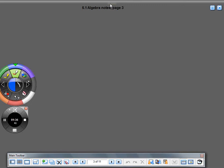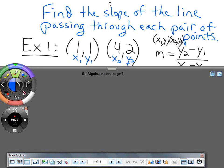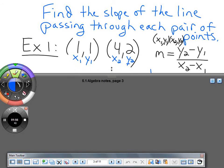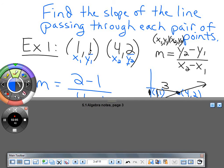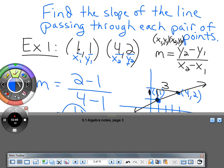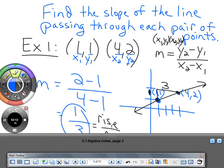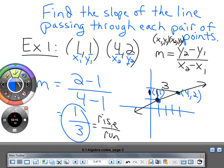Let's try a problem. Find the slope of the line passing through each pair of points. Label the points - it doesn't matter which is first. We have X₁, Y₁, X₂, Y₂. We subtract Y₂ minus Y₁ over X₂ minus X₁. Plugging in, we get 2 minus 1 over 4 minus 1, which gives us 1 over 3. If we plot the points, we go up 1 and over 3. That's the rise over run.